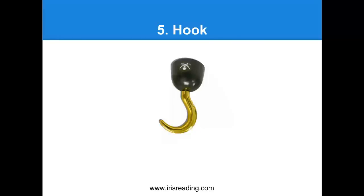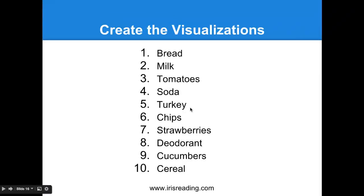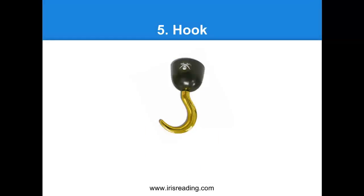Now number five — we've got to get turkey. Five looks like a hook, and I associate hooks with pirates. So picture this: you're at Thanksgiving and you're told you have a new family member you've never met — and he's a pirate. He shows up and actually has a hook for a hand. He's carving the turkey at your Thanksgiving dinner with his hook. Imagine a pirate carving the turkey with his hook of a hand. So when we remember five being the hook, that's going to remind us of the pirate carving the turkey.